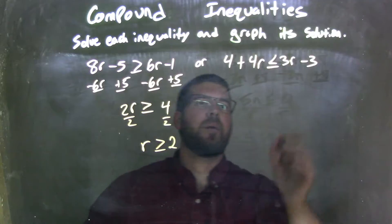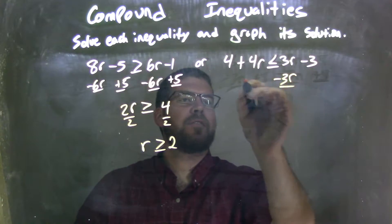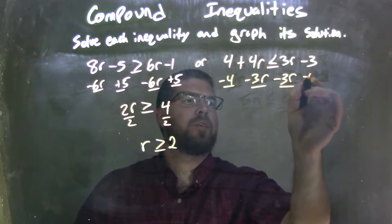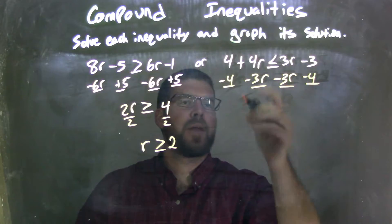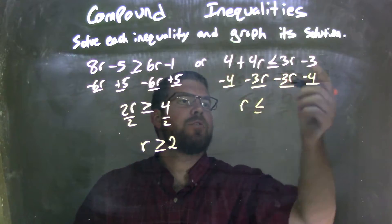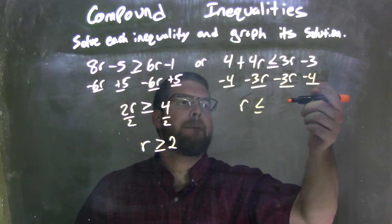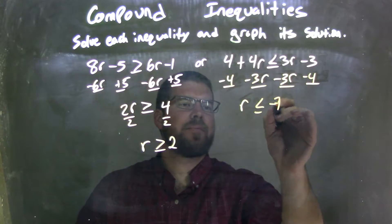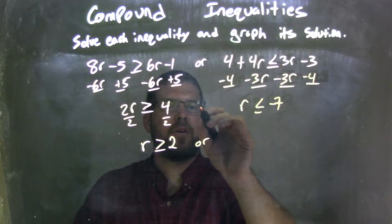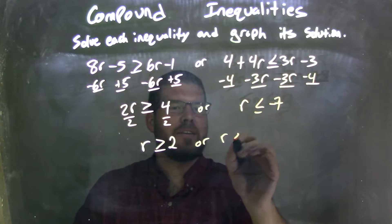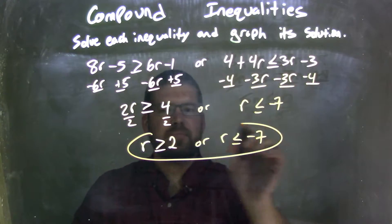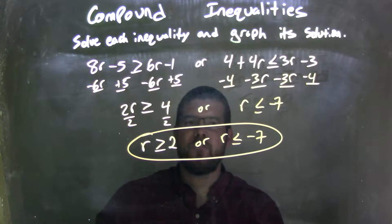Now for the second inequality, I'm going to subtract 3r from both sides and subtract 4 from both sides as well. 4r minus 3r is just 1r, and it's less than or equal to negative 3 minus 4, which is negative 7. So r is less than or equal to negative 7. Both my r's are isolated.